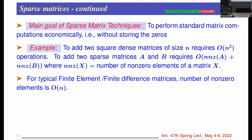The goal of sparse matrix techniques is to reduce computations and memory. For example, if you add two sparse matrices A and B, the number of nonzeros nnz(A+B) ≤ nnz(A) + nnz(B), and nnz(A) is typically of order n. So you can do this in O(n) operations, whereas in dense mode it would be O(n²).